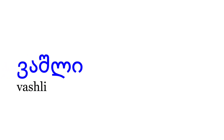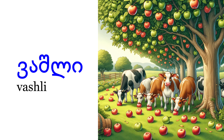Likewise, for this next example, I'm not using English as the basis of my mnemonic. "Vashli" means apple, and it reminds me of the French word "la vache," which means cow. So I think of cows eating apples. Vashli.